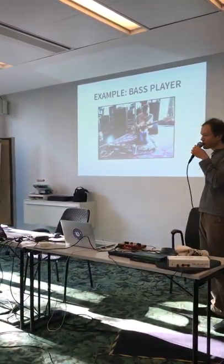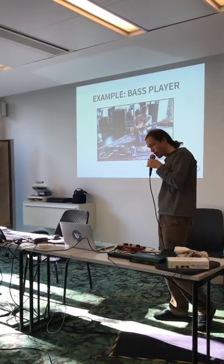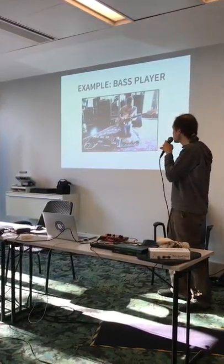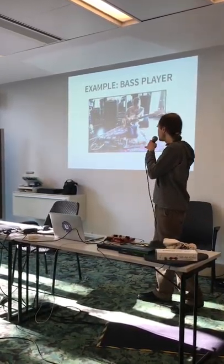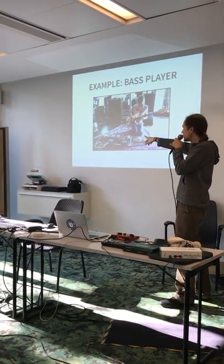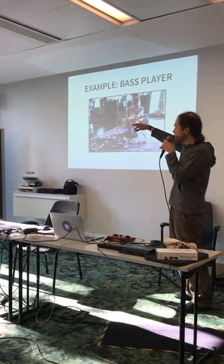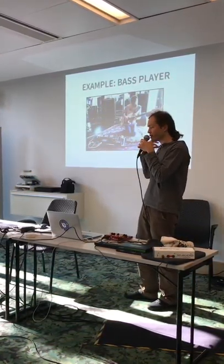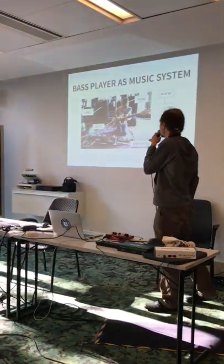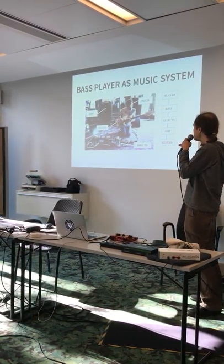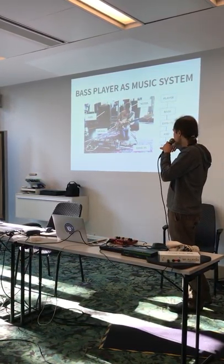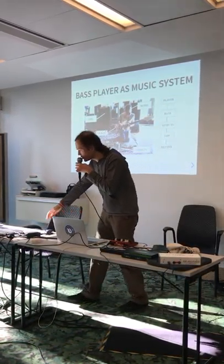What does it mean to have a functional model for music? Here we have a bass player — a very good one. He's creating notes with his heart and his mind, converting the notes to a signal. The signal goes through effect processors and then to the speakers, hitting the reverb, and we can hear it. As a model, it starts with the notes, goes to the signal, then through signal effect processors — amplifier, reverb — and we can hear the wonderful music.